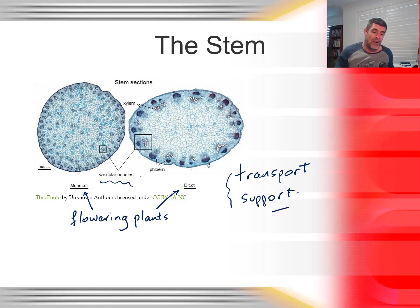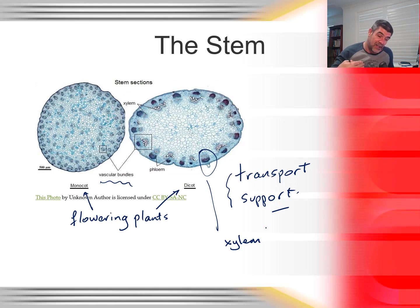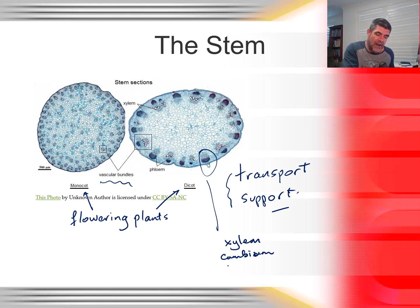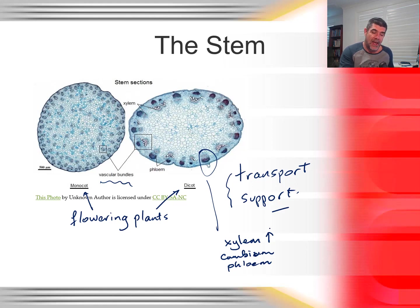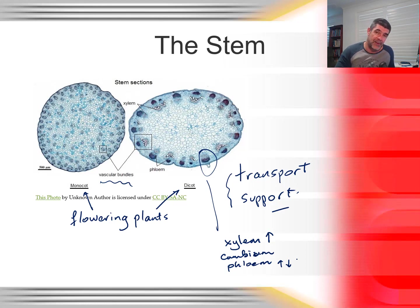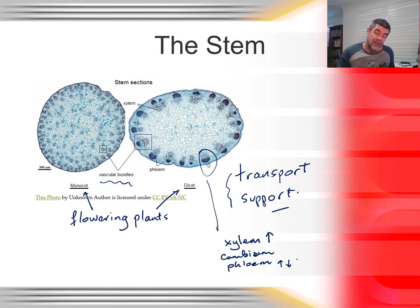Within the vascular bundles, there are three distinct regions. Xylem tissue sits closest to the centre of the plant, then cambium tissue — undifferentiated tissue that can become specialised vascular tissue later on — and then phloem. Water and salts are transported through the xylem, and organic material through the phloem. The xylem tends to be a one-way system bringing material up from the ground, whereas the phloem can transport material in both directions.